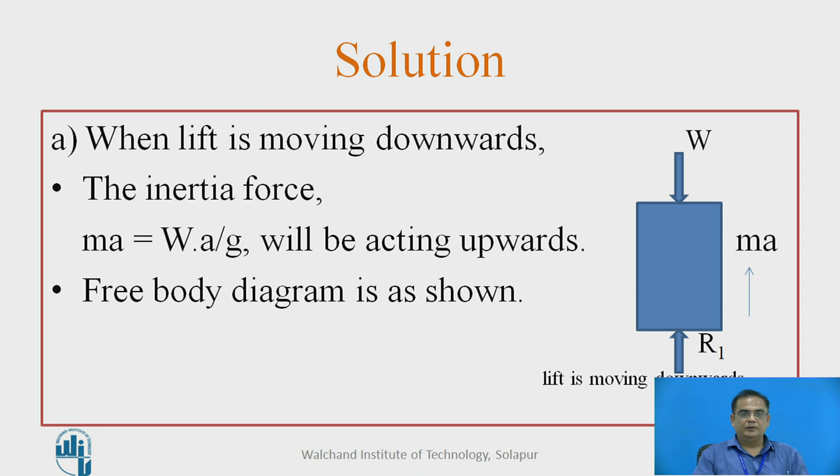Let us solve this problem using D'Alembert's Principle. Draw a free body diagram like this. Weight of lift will be acting downwards. First, we will consider lift moving downwards condition. So, reaction from the floor will be upwards known as R1. And apart from these two forces, there will be inertia force or D'Alembert's force equal in magnitude to Ma acting upwards because lift is moving downwards. So, this is the free body diagram.